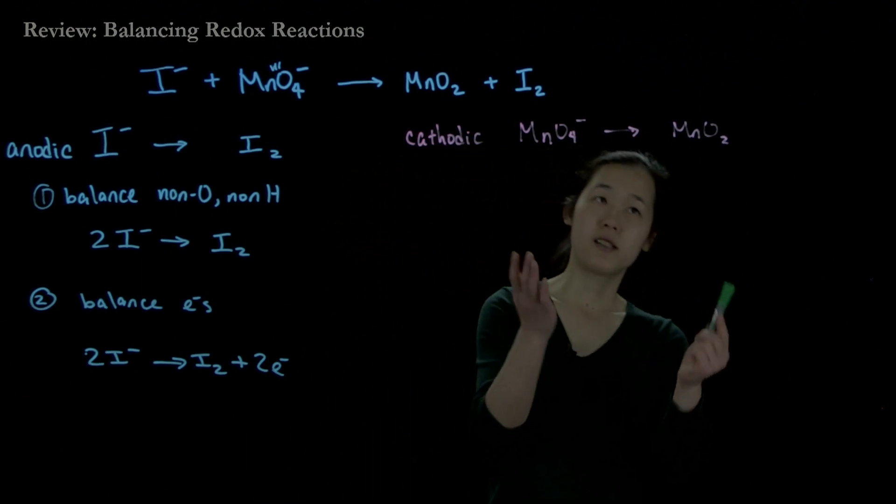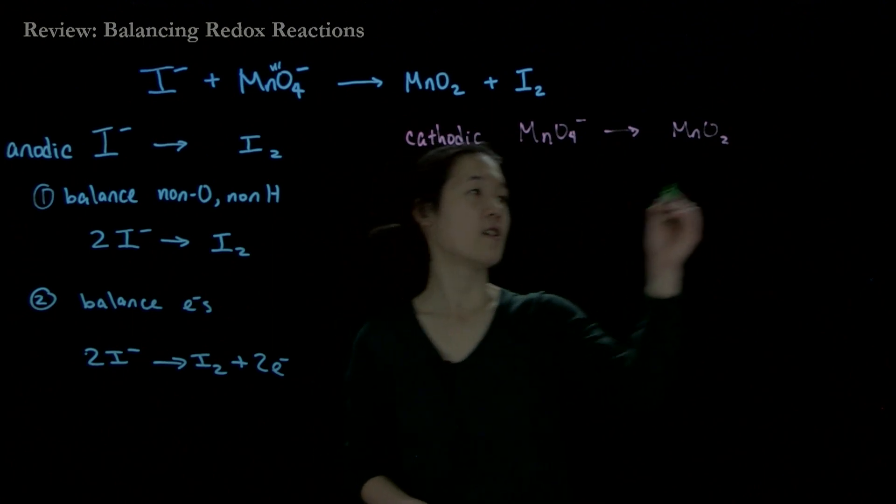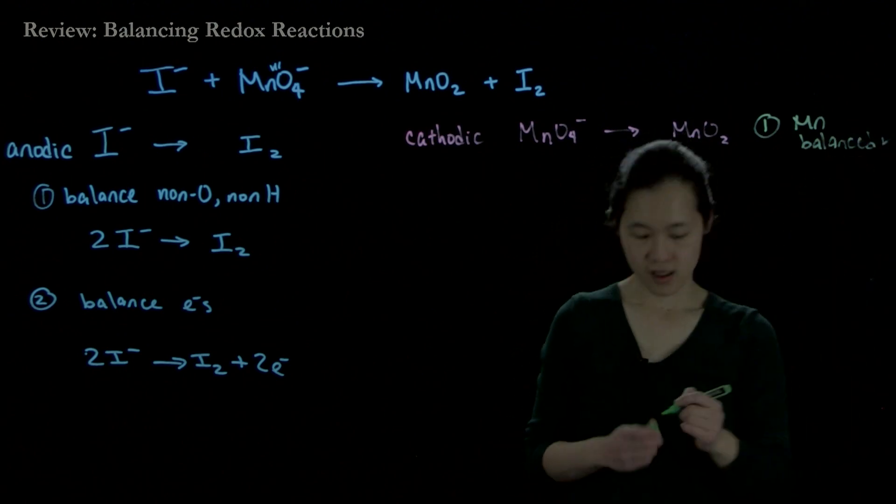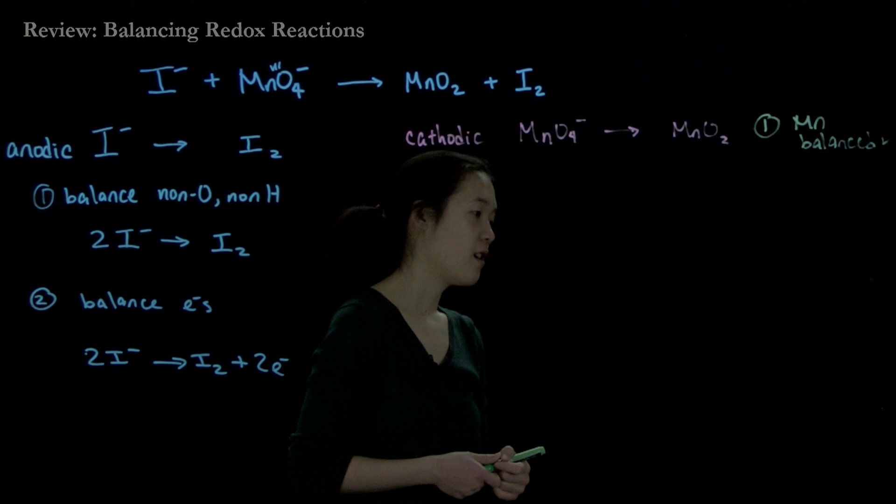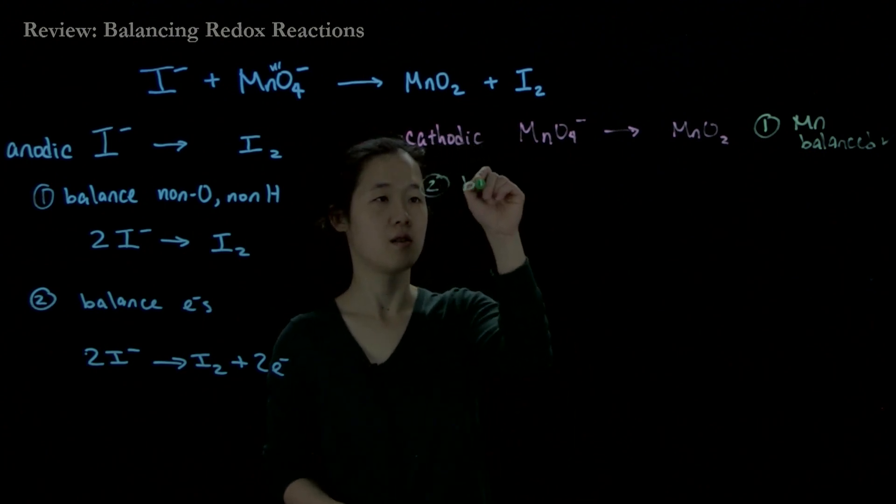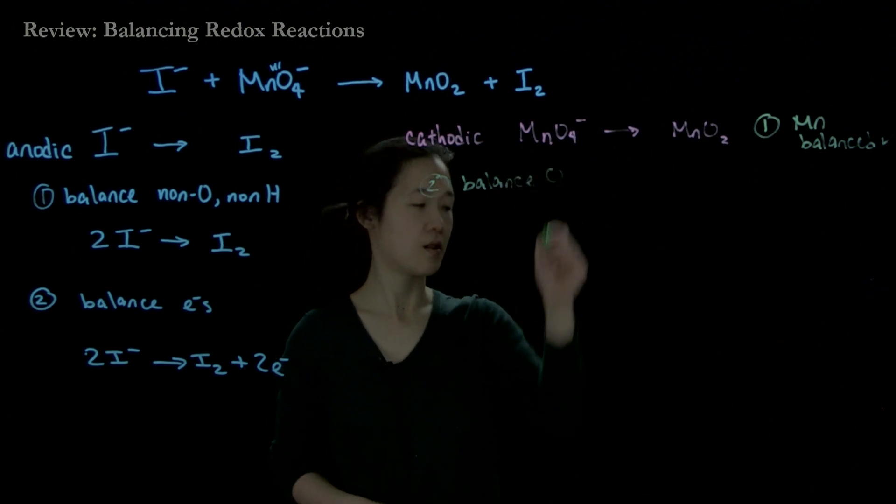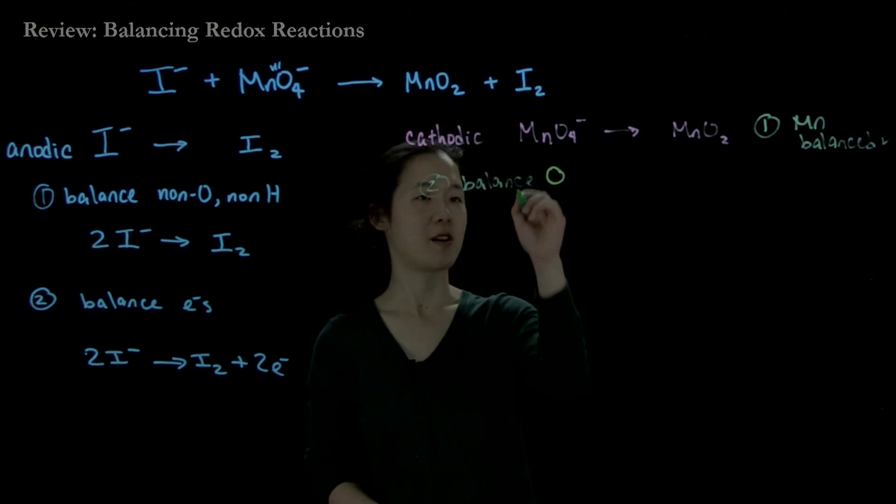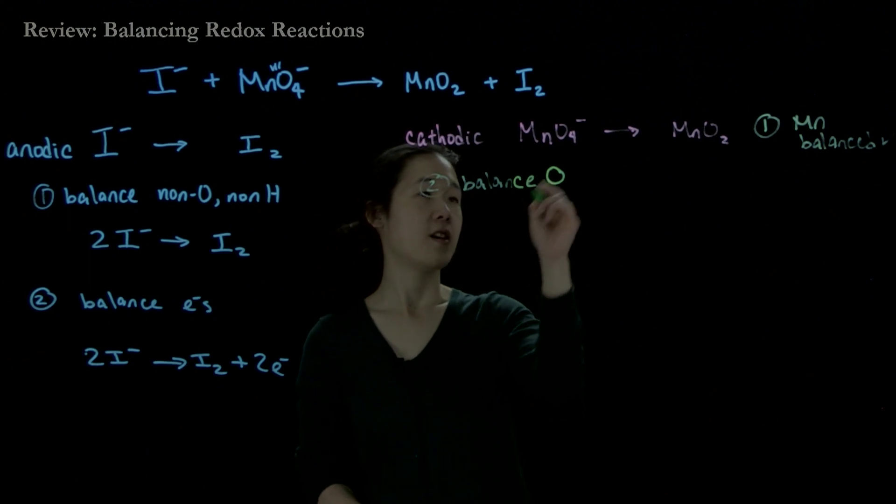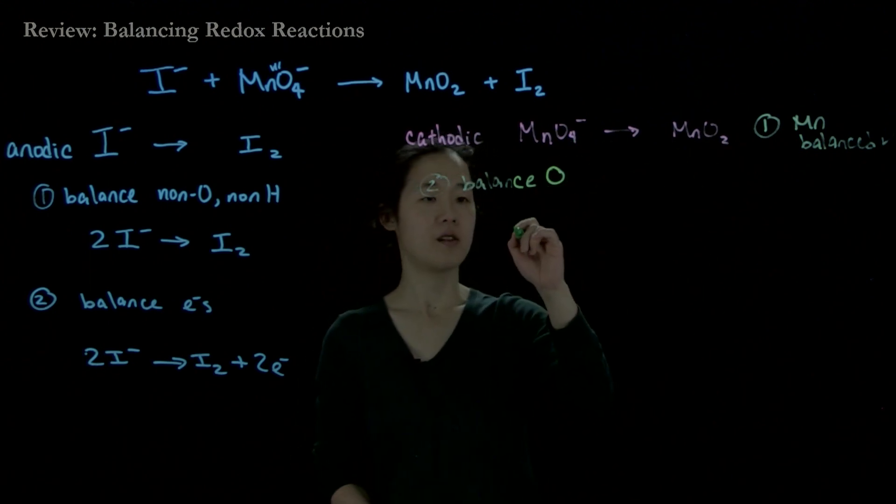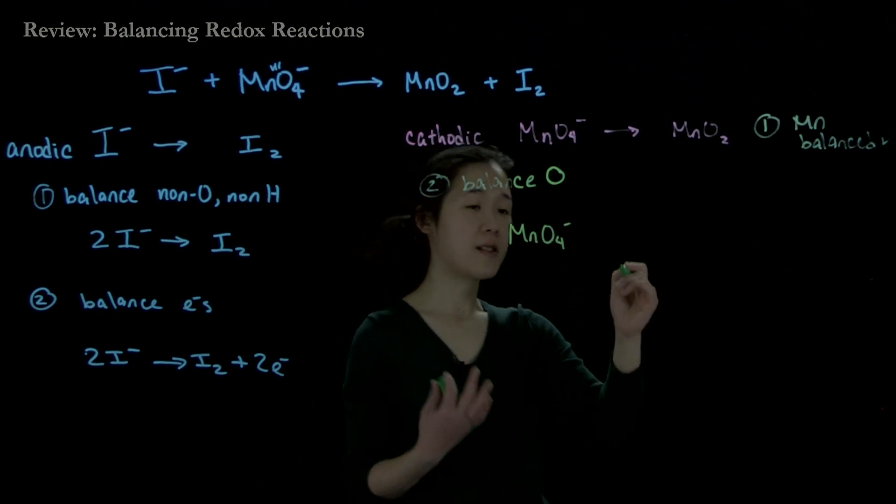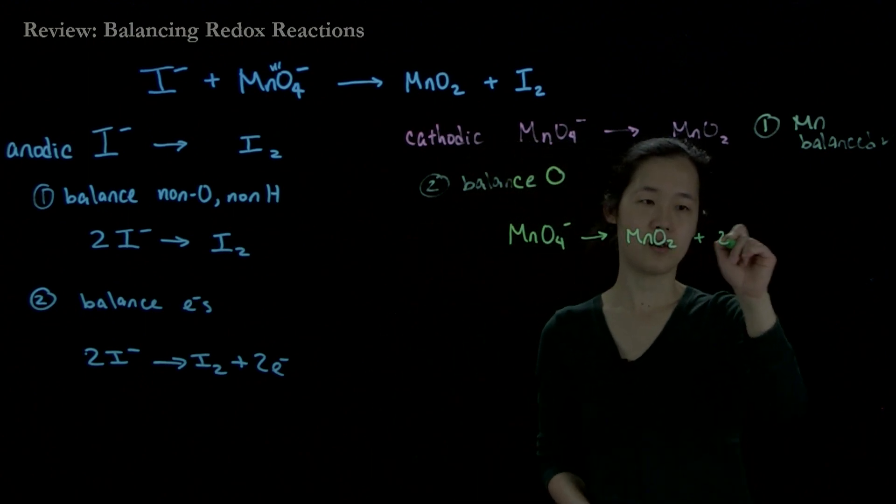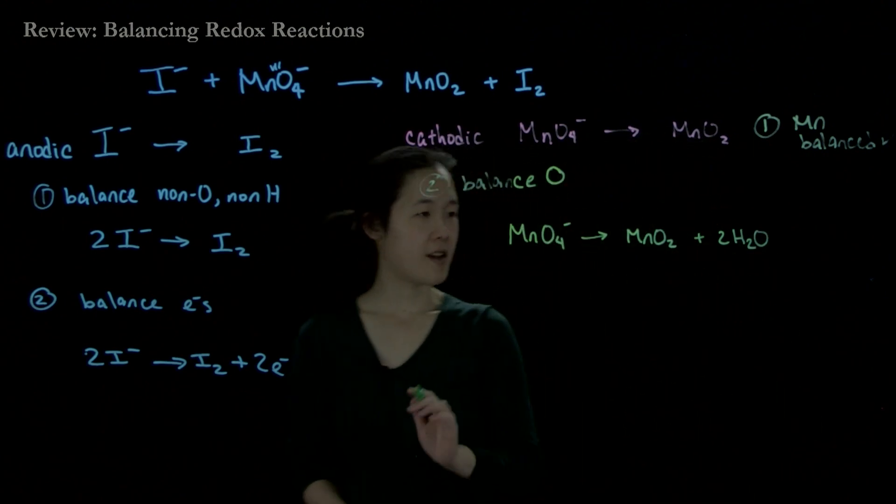For the cathodic side, this is a little more complicated. Step one: our manganese atoms are balanced. Step two: we'll balance our oxygens. Here we have four oxygens, here we have two. So we balance MnO4- by adding water: MnO4- goes to MnO2 plus 2H2O. Now our oxygen atoms are balanced.